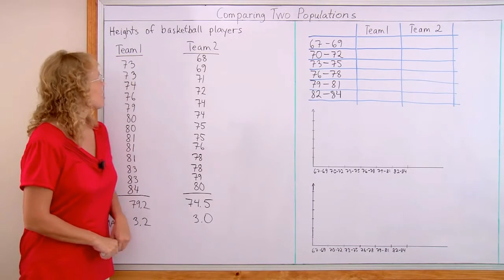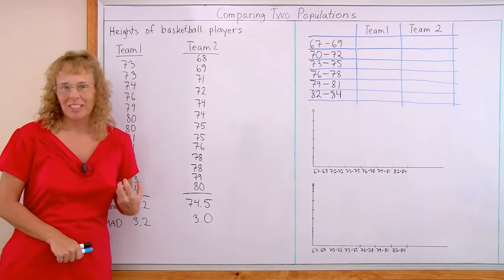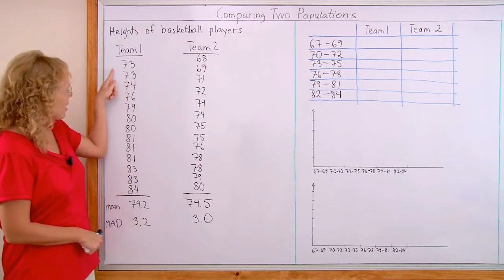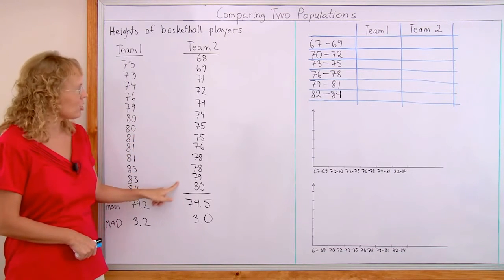Basically, my populations are two basketball teams. And we're studying the heights of those basketball players. Team 1, their heights are here in inches. And Team 2, their heights are here in inches.